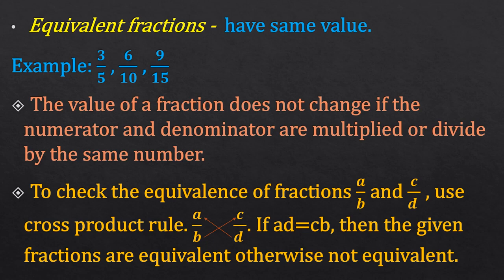To check the equivalence of two fractions a upon b and c upon d, we use the cross product rule. We do cross multiplication: a multiplied by d must be equal to c multiplied by b. If they are equal, the fractions are equivalent; otherwise they are not.